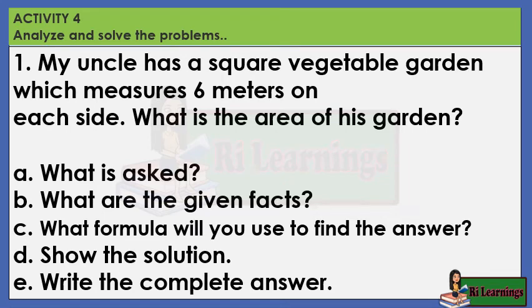Activity 4: Analyze and solve the problems. Problem 1: My uncle has a square vegetable garden which measures 6 meters on each side. What is the area of his garden?